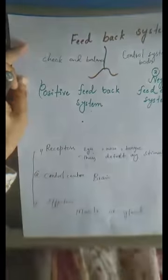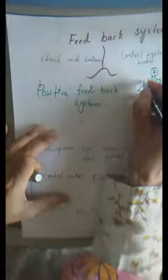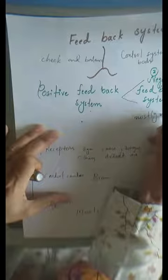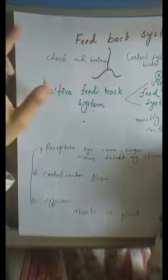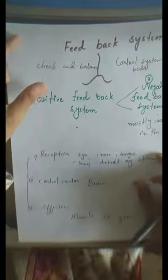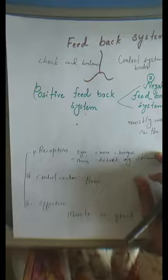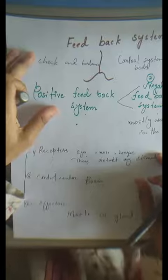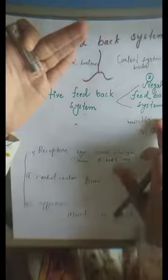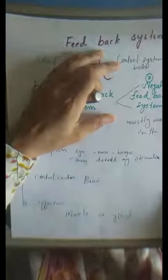There are two types of feedback system: number one is positive feedback system, and number two is negative feedback system. Mostly in our body we use the negative feedback system. For example, if the concentration of glucose increases in the body, the negative feedback system converts glucose into glycogen. When we need it, it converts glycogen back into glucose. Similarly, when temperature increases, the negative feedback system increases hormone concentration to maintain our temperature.